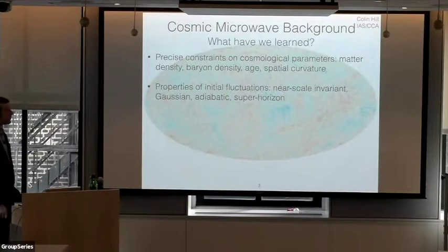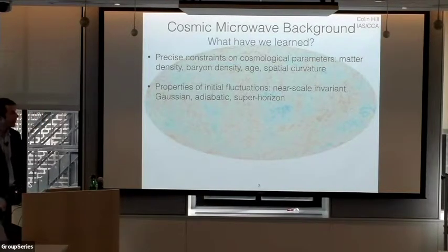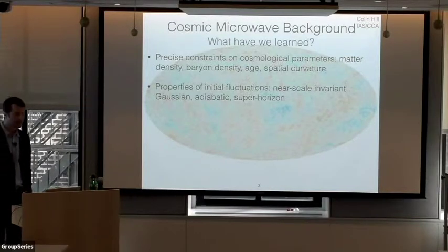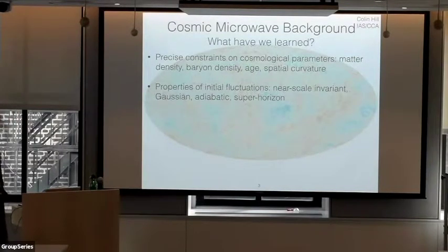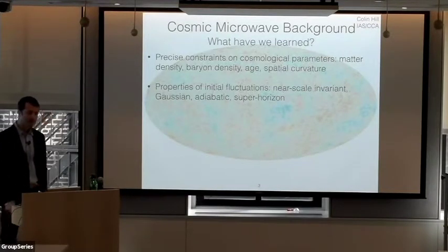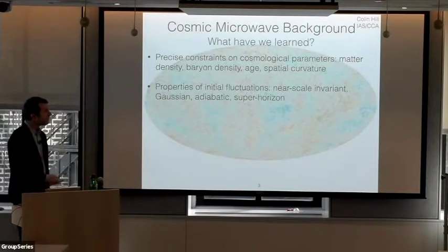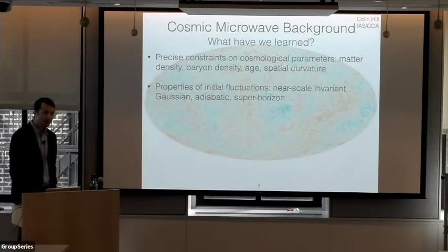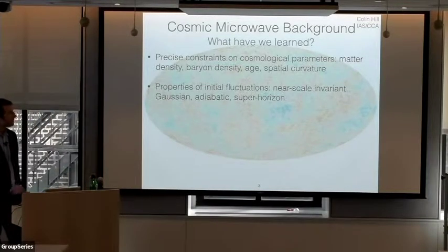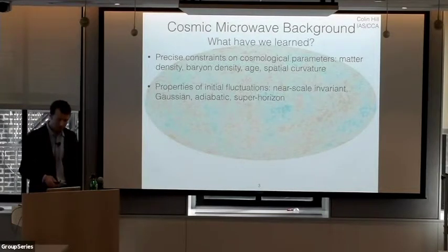What have we learned from this analysis? We've constrained background cosmological parameters like the matter density, baryon density, age of the universe, and spatial curvature at high precision. We've also learned a lot about the properties of the initial fluctuations that seeded all structure in the universe. We know they're drawn from a nearly scale-invariant distribution, consistent with Gaussianity, and are adiabatic — all components in the energy density fluctuated together. There are also super-horizon correlations in these fluctuations, which we can infer directly from the CMB.